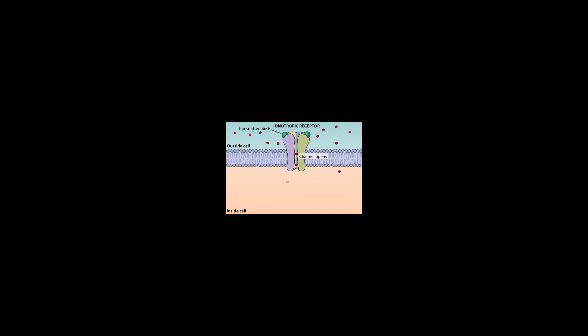Ionotropic receptors generally mediate rapid postsynaptic effects. The postsynaptic potentials arise within a millisecond or two of an action potential invading the presynaptic terminal and last for only a few tens of milliseconds or less. The second family of neurotransmitter receptors are the metabotropic receptors, so-called because the eventual movement of ions through a channel depends on one or more metabolic steps. Metabotropic receptors do not have ion channels as part of their structure; instead, they affect other channels through activation of intermediate molecules called G-proteins, and are also called G-protein-coupled receptors.